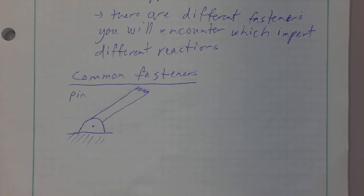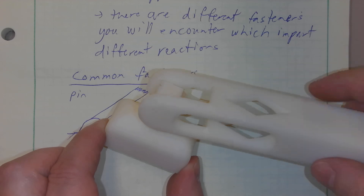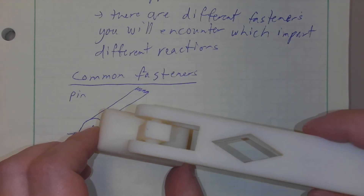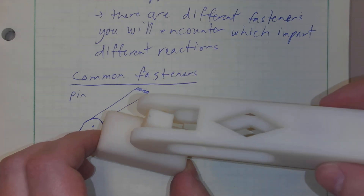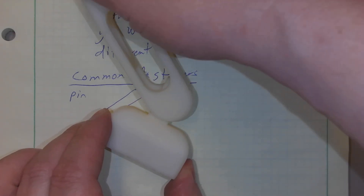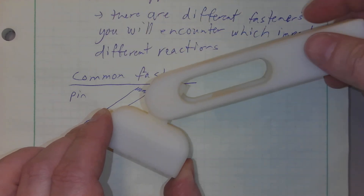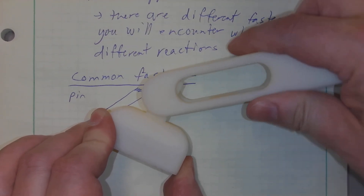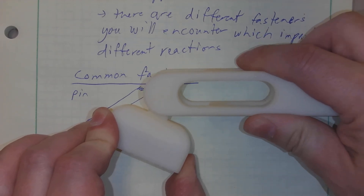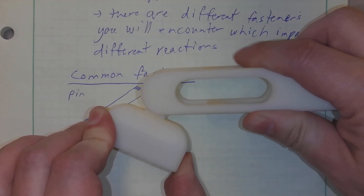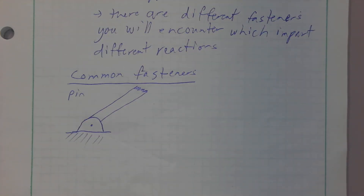I've got a 3D print of one here — you can see there's essentially some sort of a shaft, or maybe some kind of pin through this. Since this is 3D printed we're able to print it as one piece, but you can see it's something that can rotate around that point. I can't move it up in the y direction, can't move it left or right in the x direction, but it will rotate. That's what motion is allowed.